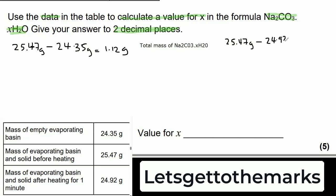The next step is to find out how much water was removed. After heating for one minute the mass went down to 24.92. So let's take 24.92 from 25.47 and the answer is 0.55 grams of water evaporated.